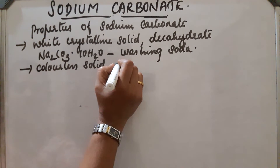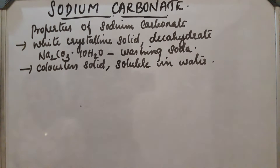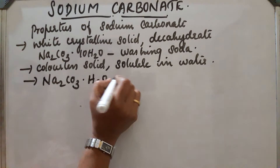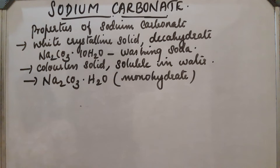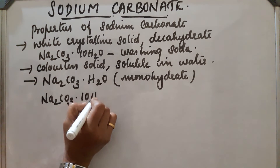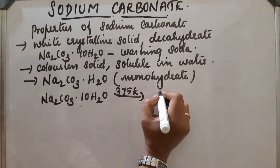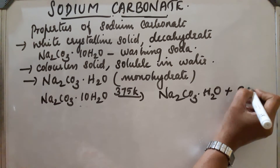On heating, washing soda loses its water of crystallization and forms sodium carbonate monohydrate. Specifically, Na2CO3·10H2O on heating at 375 Kelvin gets converted into Na2CO3·H2O (monohydrate) plus 9H2O.